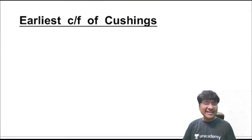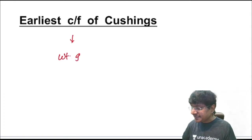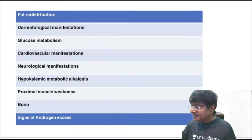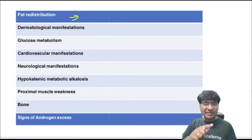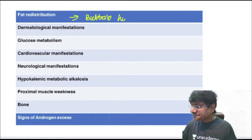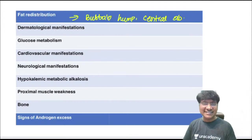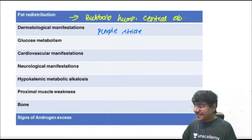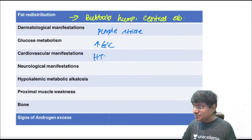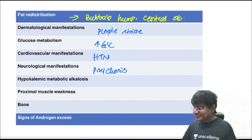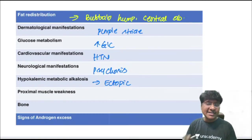Earliest clinical feature of Cushing's is weight gain. Other features: buffalo hump and central obesity from fat redistribution due to increased free fatty acids; purple striae (dermatological); hyperglycemia; hypertension; psychosis (neurological); hypokalemic metabolic alkalosis — very common with ectopic ACTH; proximal muscle weakness from increased protein breakdown; and osteoporotic bone.